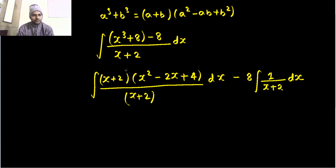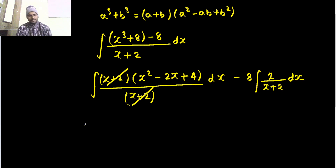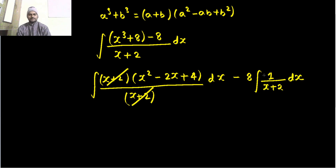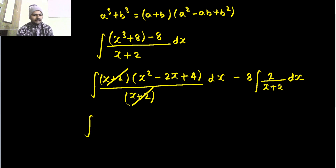Now as you can see, x plus 2 is getting cancelled. And you are getting x square minus 2x plus 4, which you can easily integrate. You can also easily integrate 1 upon x plus 2. So let's do that — let's integrate x square.